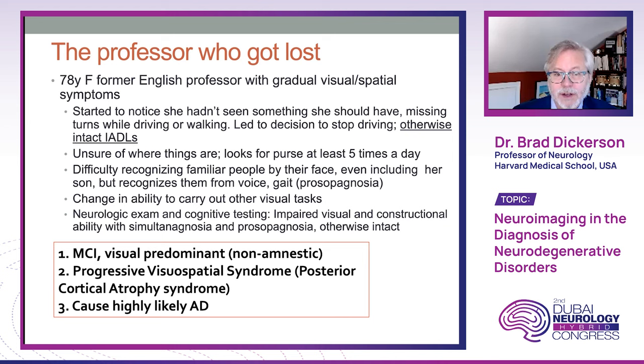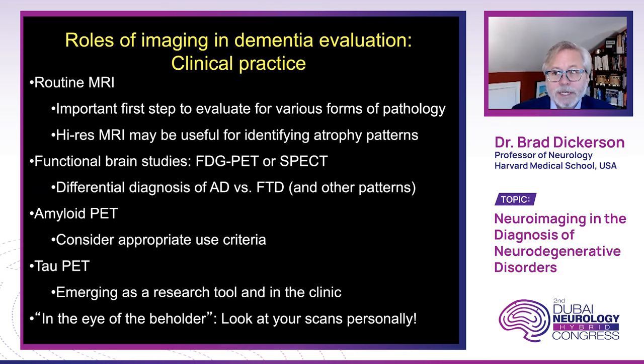We ultimately diagnosed this patient with MCI, visual predominant non-amnestic syndrome, progressive visuospatial PCA syndrome, with the cause highly likely Alzheimer's disease, as it often is in this rare condition. The roles of imaging in dementia evaluation in clinical practice are expanding as new modalities become available, even though in many practice settings these are not yet accessible. Routine MRI is an important first step to evaluate for various forms of pathology, and high-resolution MRI can identify atrophy patterns suggestive of a particular disease.